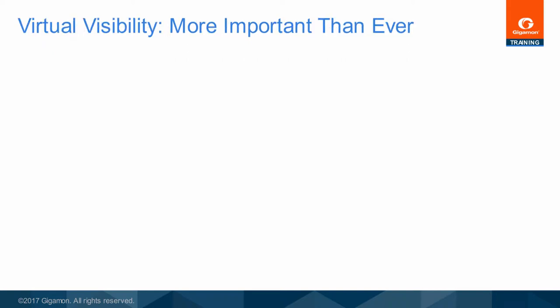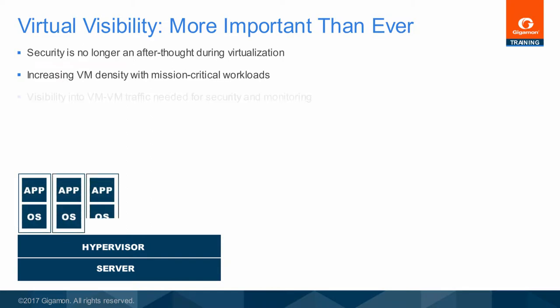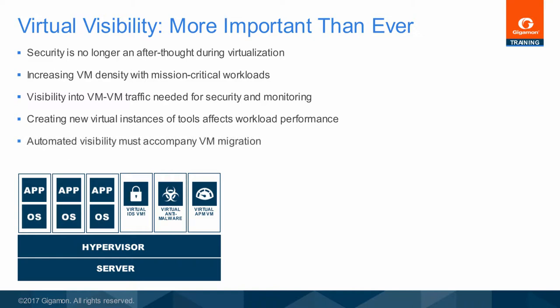With the trend toward virtualization and cloud use accelerating, there are at least five areas where the impact of virtualization is a concern. Security is no longer an afterthought during virtualization. There is rapidly increasing mission-critical workload density. Visibility into VM-to-VM traffic is required for both performance monitoring and security. Replicating the physical tool inventory with virtual instances of tools has a serious impact on workload performance. And once local tools and monitoring are configured within a hypervisor, that effort has to be reconfigured along with each workload server migration.